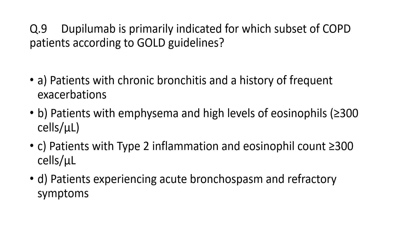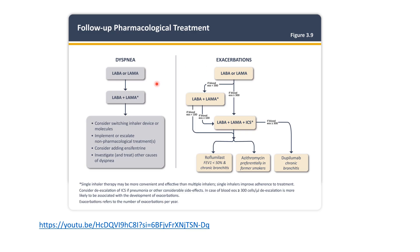Next question: dupilumab is primarily indicated for which subset of COPD patients according to the GOLD guidelines? The answer is patients with type 2 inflammation and elevated eosinophil counts of more than 300. From the GOLD guidelines, dupilumab is indicated in chronic bronchitis, not in emphysema patients, and eosinophil level should be more than or equal to 300. For further information on this dupilumab topic in COPD, you can go to the other video on this channel.